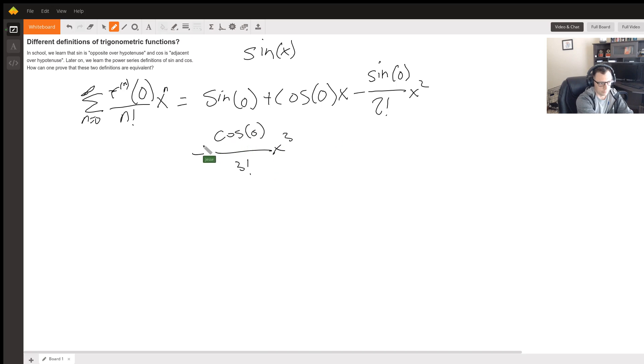And then now it's going to flip because derivative of cosine is negative sine. So now it's going to be positive sine zero over four factorial x to the four.